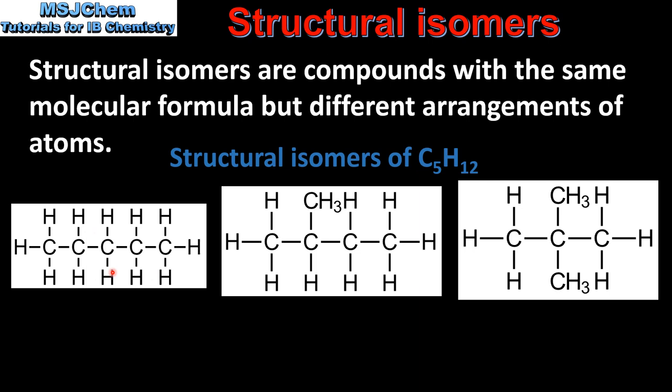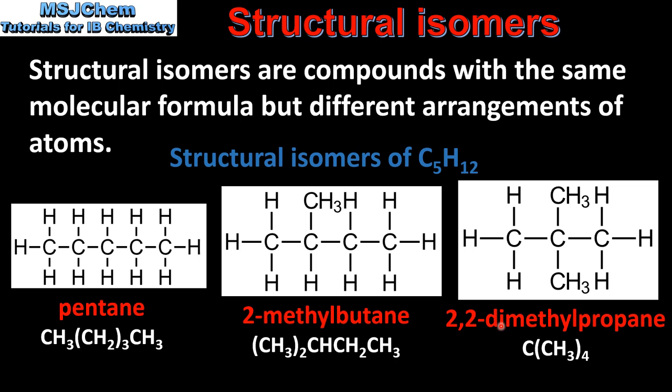Due to the different arrangement of atoms they also have different physical properties such as melting and boiling points. And they are also named differently. The first isomer is pentane, the second is 2-methylbutane and the third is 2,2-dimethylpropane.